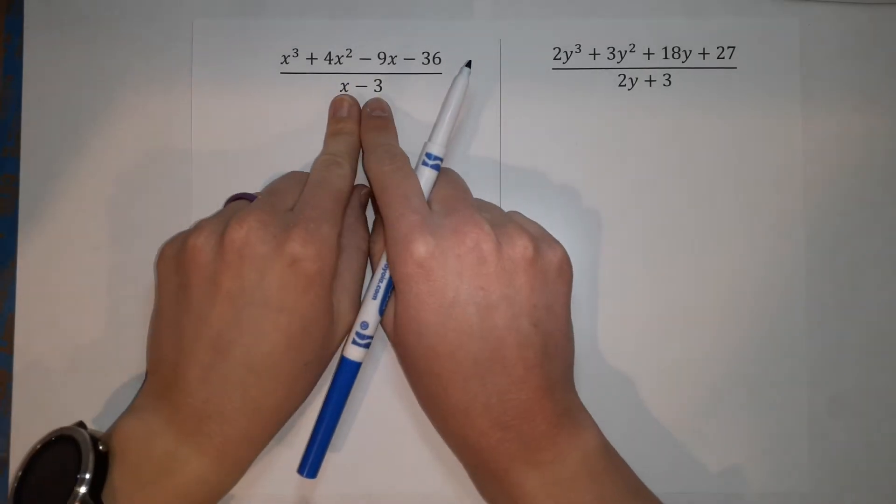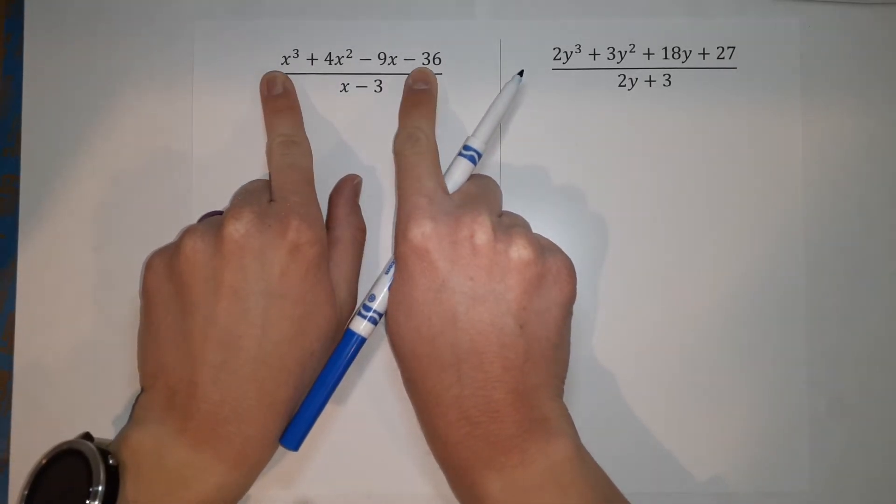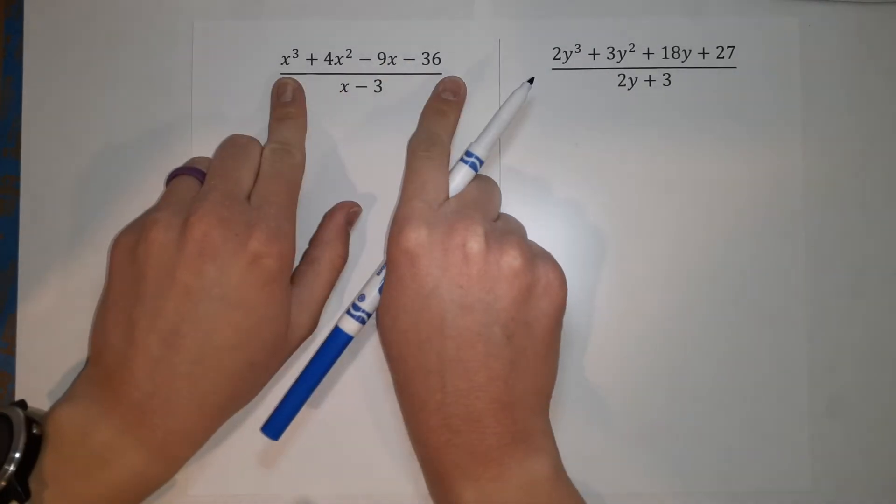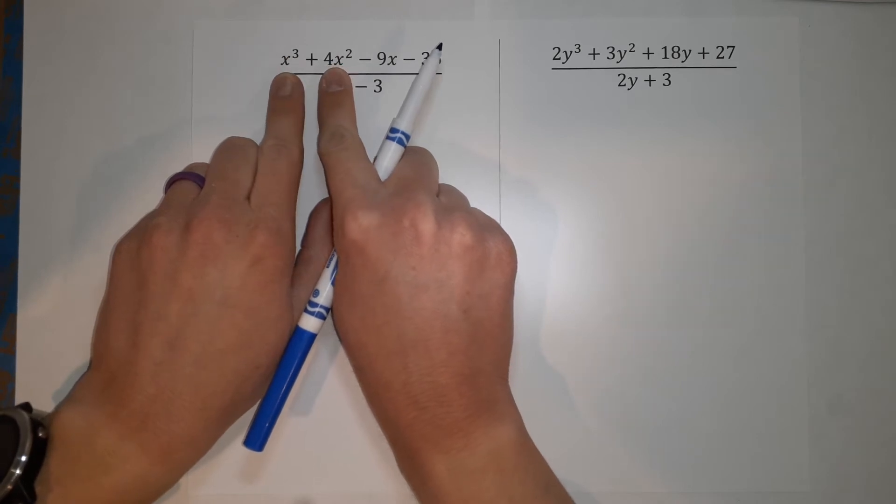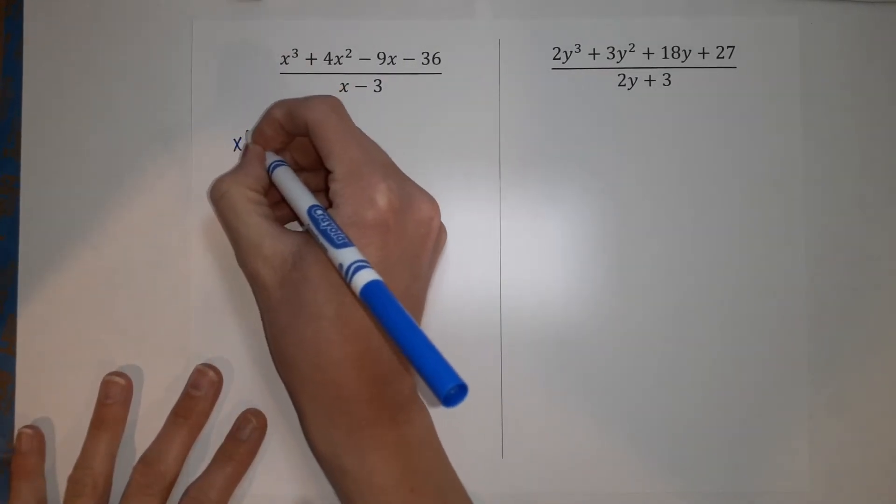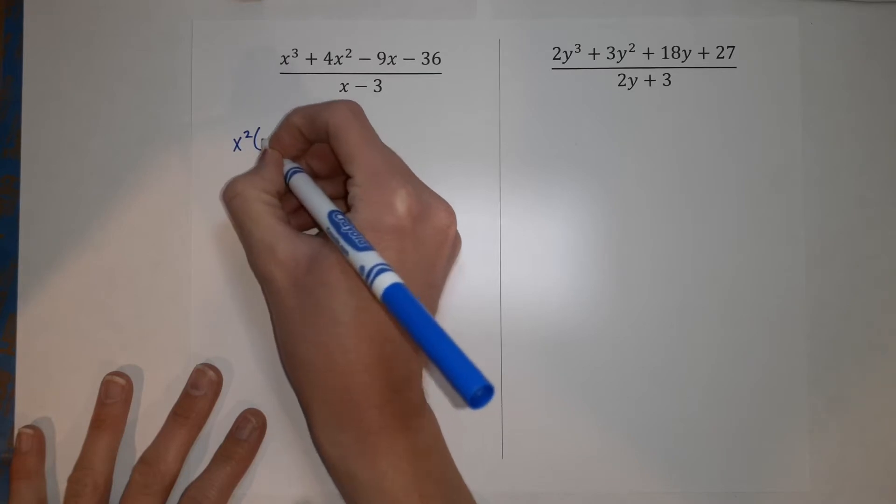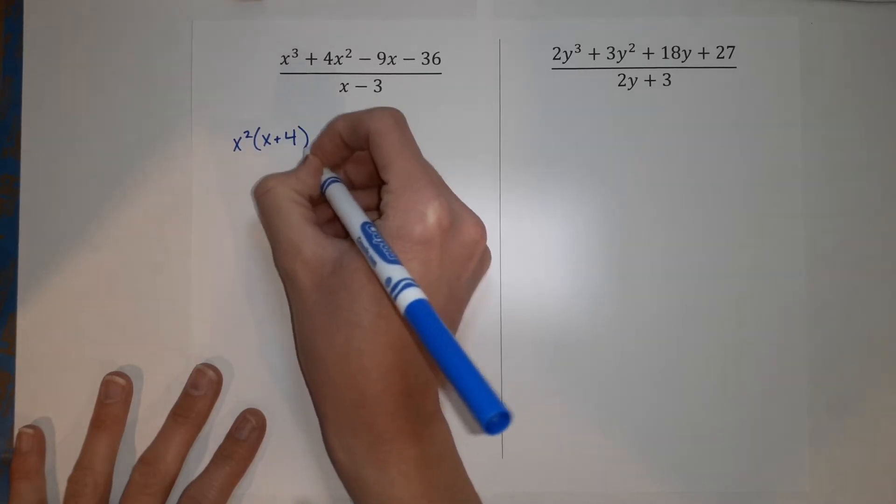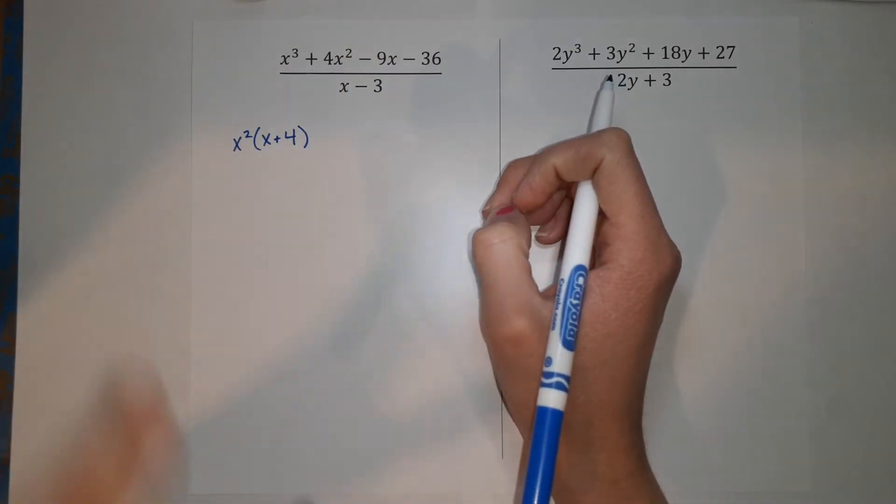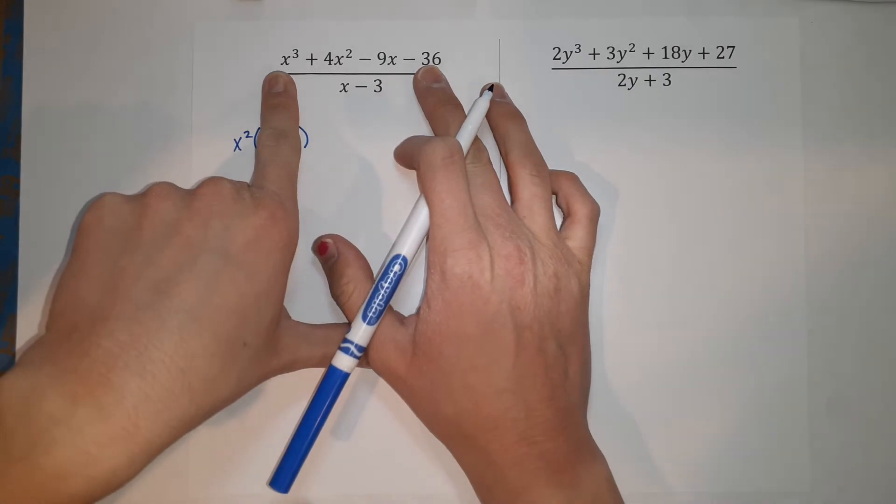All right, what I'm going to do is I'm going to take this top guy and factor it. So when I'm factoring something with four terms like this, I like to start and look at the first two. And I look at what can I pull out? What is the same between those two? I should have mentioned whenever you're factoring, it's always good to take a look at the big picture and make sure there's not something you can pull out from everything. But that's not the case here.